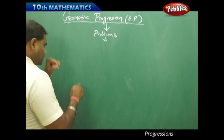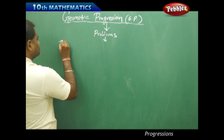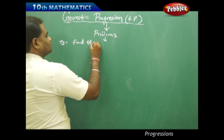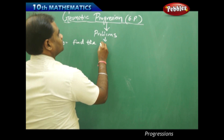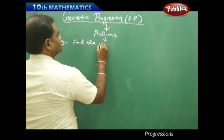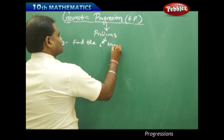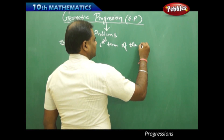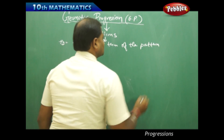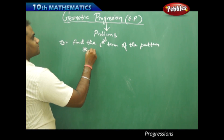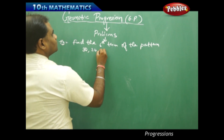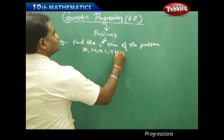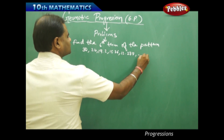Say for example I give a problem which says: find the sixth term of the pattern — 30, 24, 19.2, 15.36, 12.288, and so on and so forth.